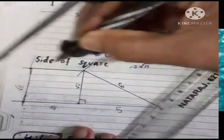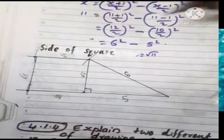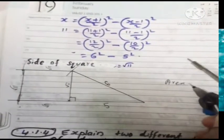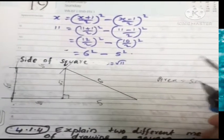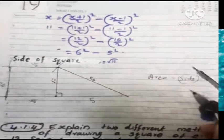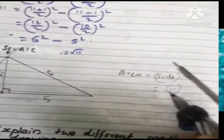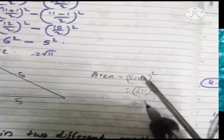Root 11, then area equal to side whole square equal to root 11 whole square equal to 11.